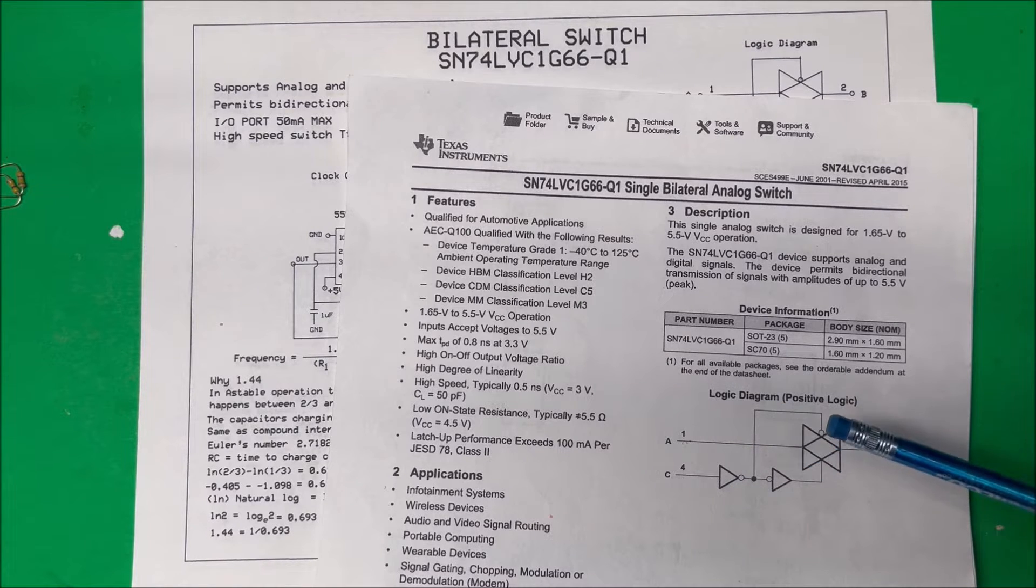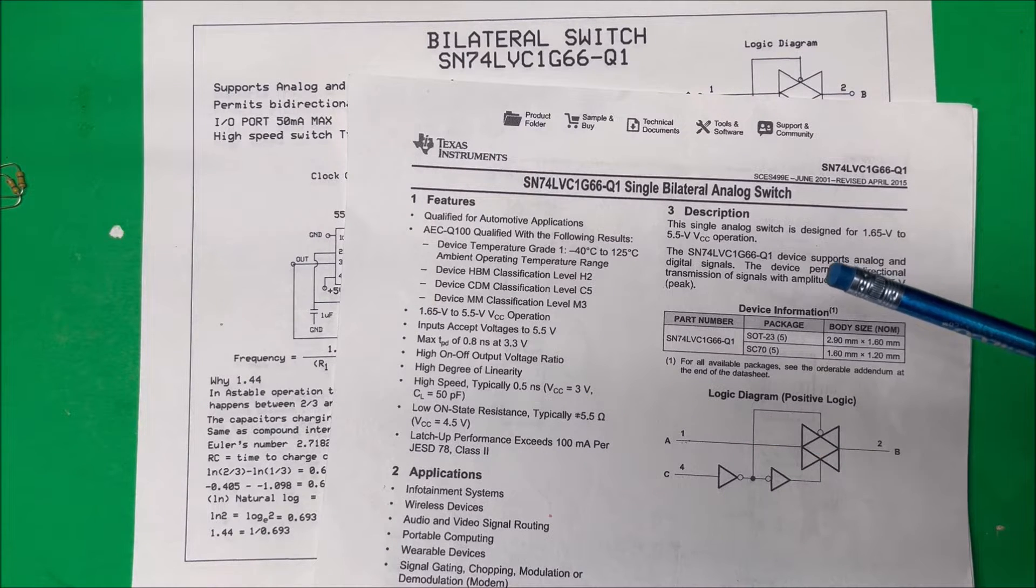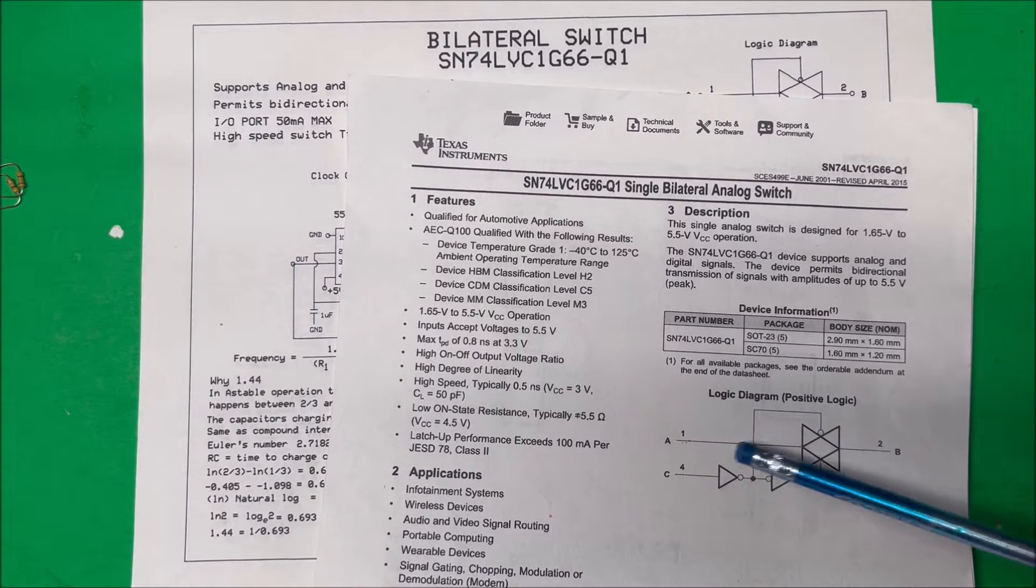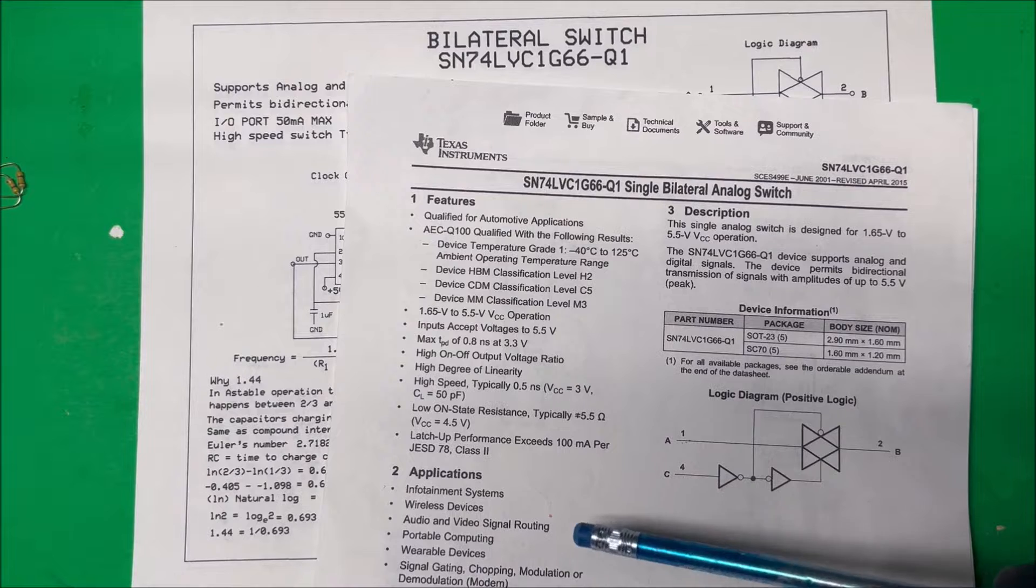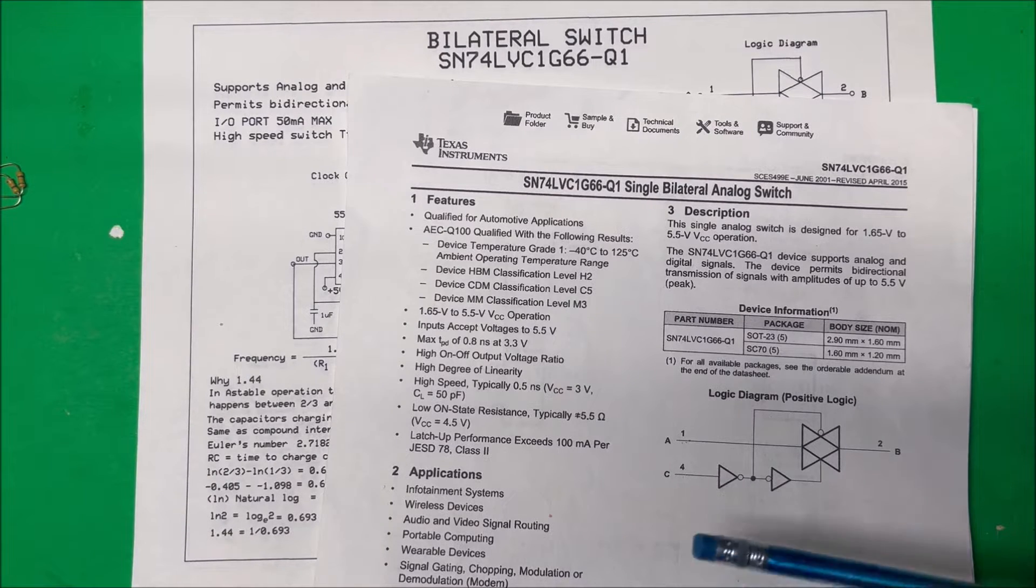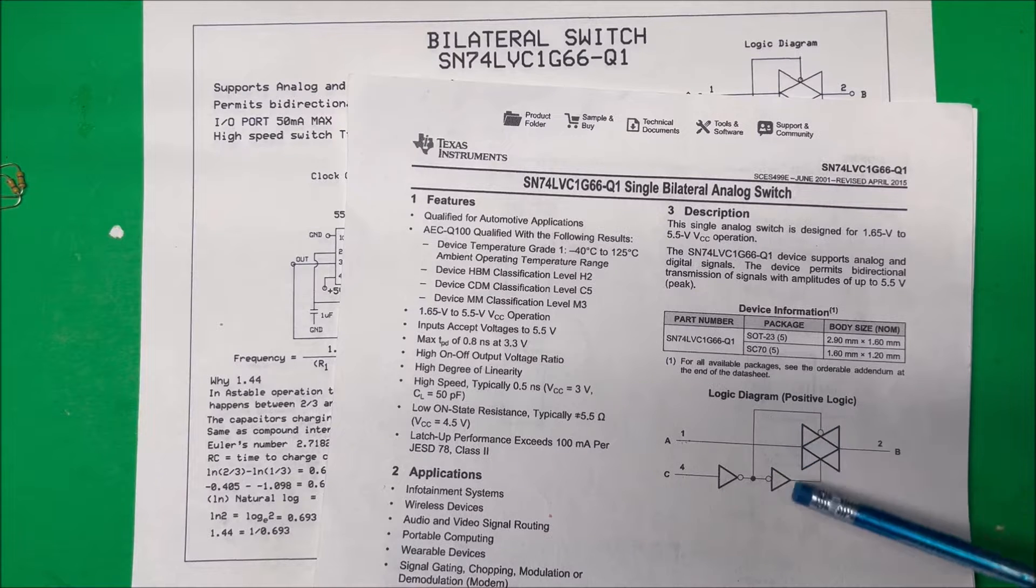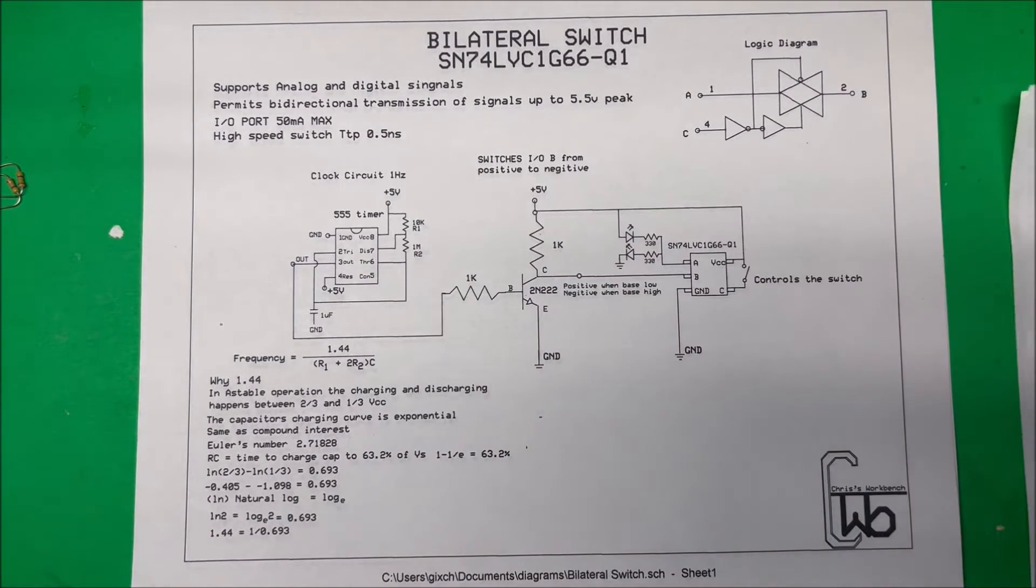It's fairly fast, 0.5 nanoseconds, and the on-state resistance is about 5.5 ohms. They use it in audio/video signal routing, analog-to-digital conversion systems, and digital-to-analog. It's a useful little chip to have in your arsenal. Let's take a look at it over here.